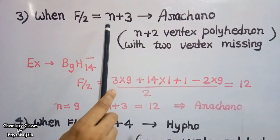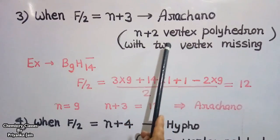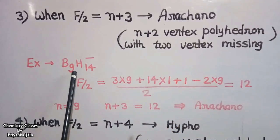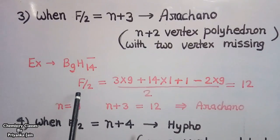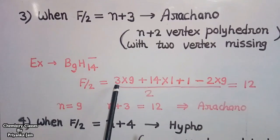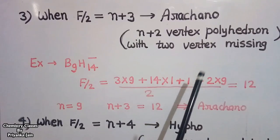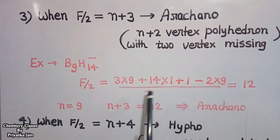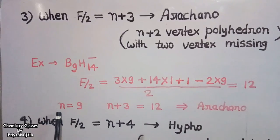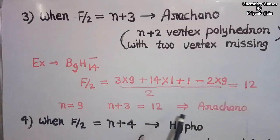When F/2 equals N plus 3, the compound will be arachno — it is an (N+2)-vertex polyhedron with 2 vertices missing. For B₉H₁₄⁻: F/2 = (3×9 + 1×14 + 1 − 2×9) / 2 = (27 + 14 + 1 − 18) / 2 = 24/2 = 12. Here N is 9, and N+3 equals 12, so the compound has an arachno structure.